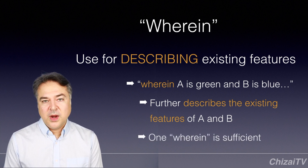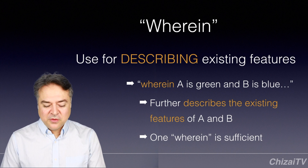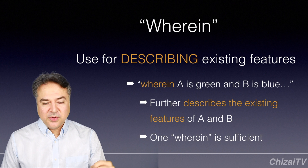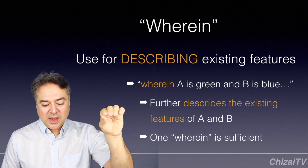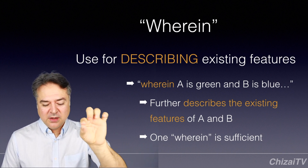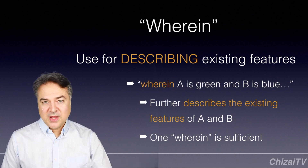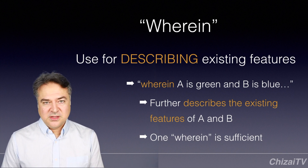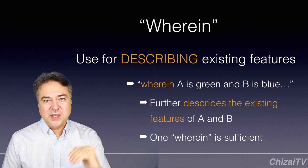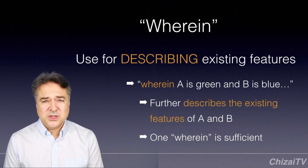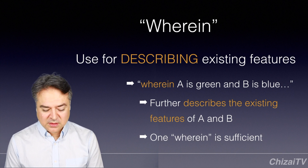One wherein is sufficient. If you have a list of features you're describing, you can use wherein with a colon and say: A is green, B is blue, C is red, D is orange, and so on. You don't need to repeat the wherein language for each element — but if you do, it's not wrong, there's nothing wrong with it.